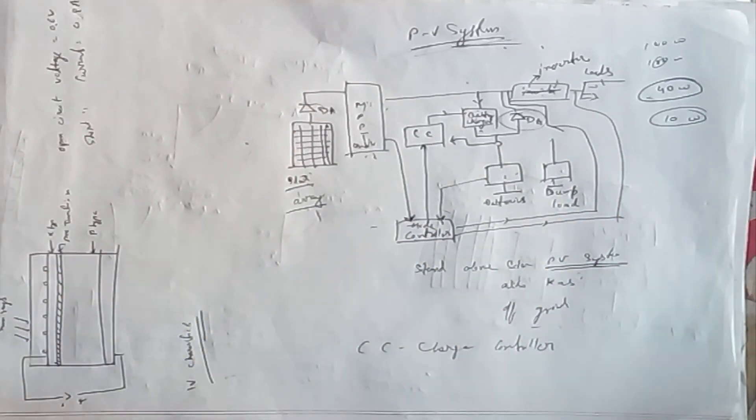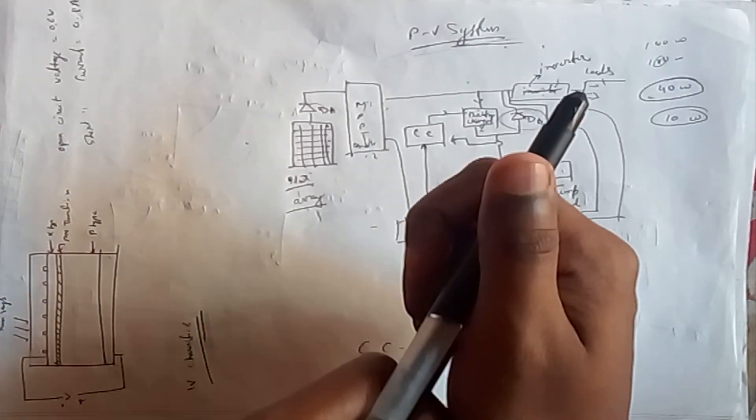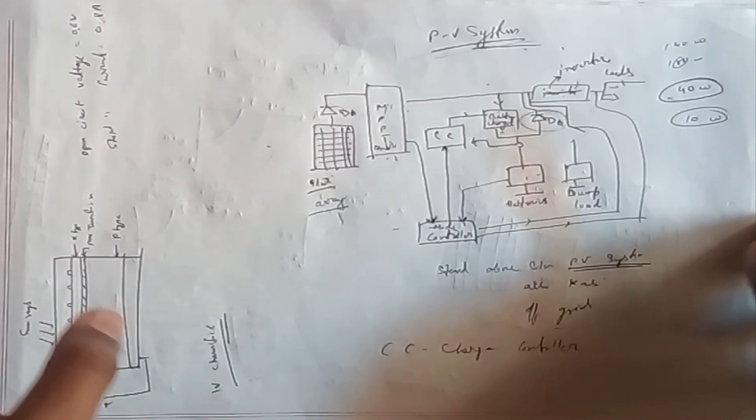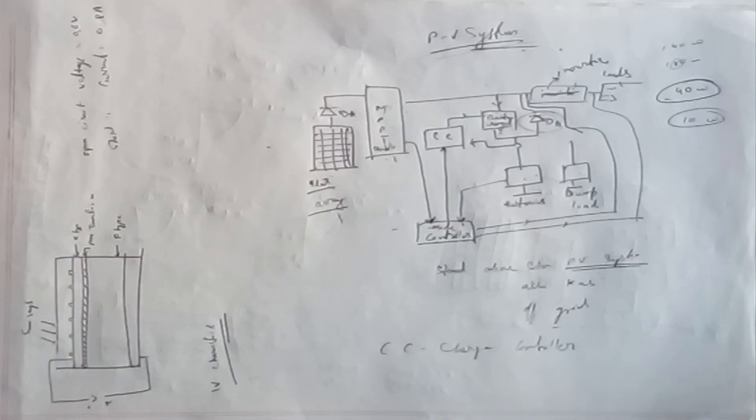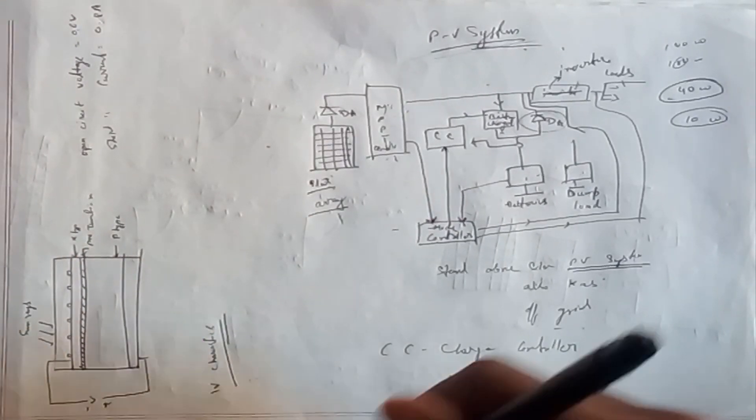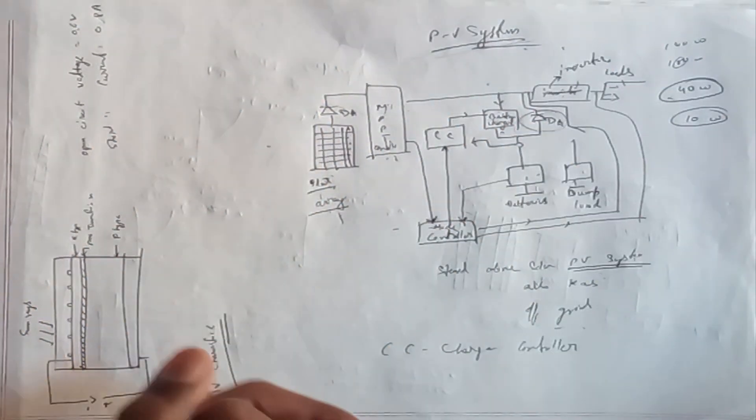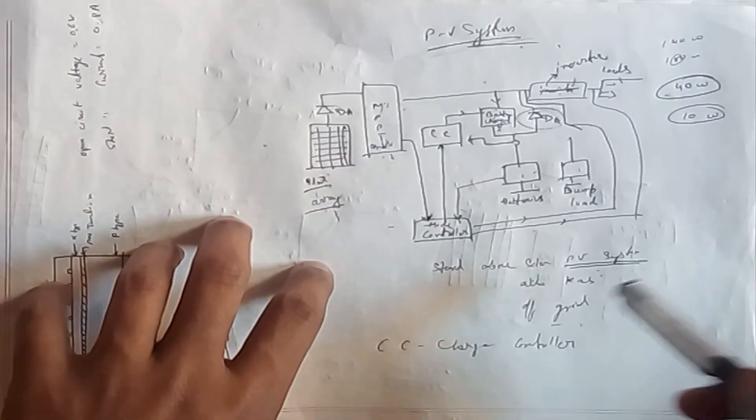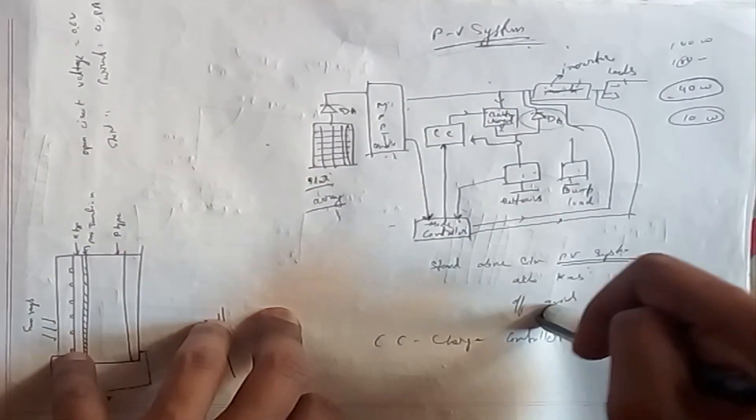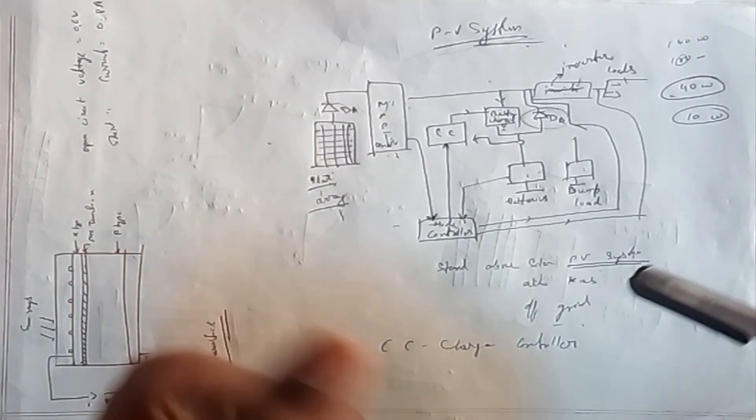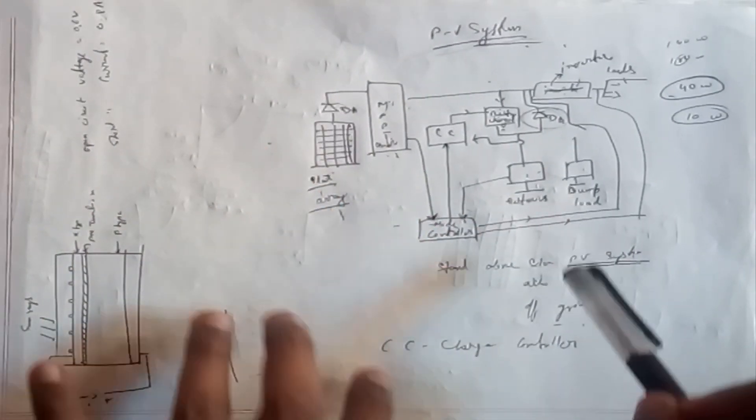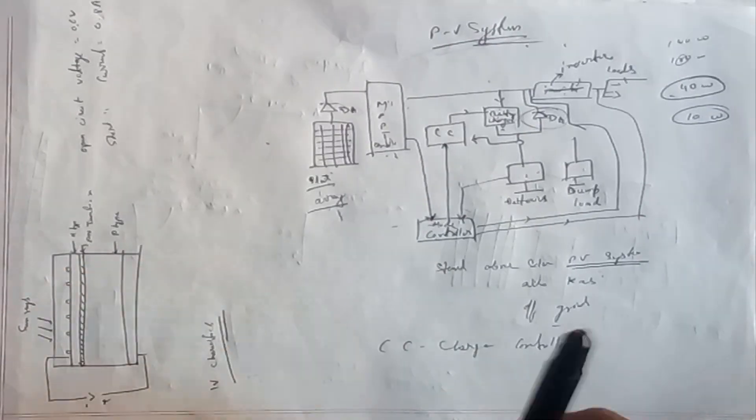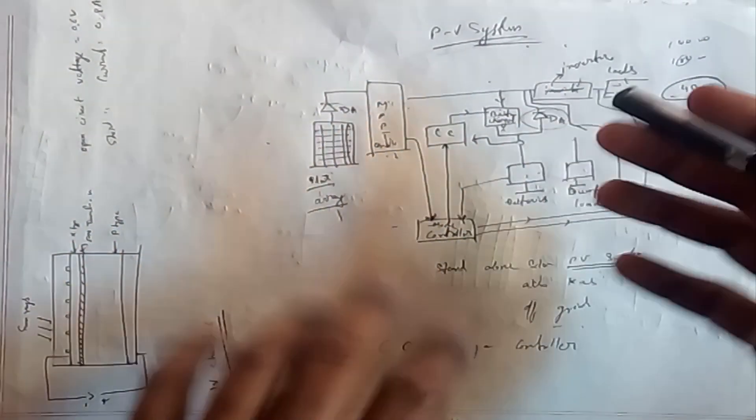In the previous video, we talked about PV Sol. I said I would give you guys a standard PV system. This is your standard PV system, also called an off-grid PV system. The on-grid and off-grid concept I will teach you in the next video. This is a standard PV system, let's explain in details.